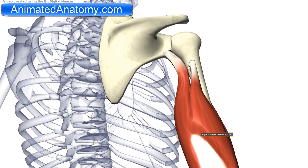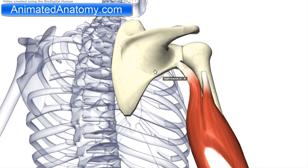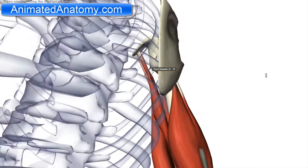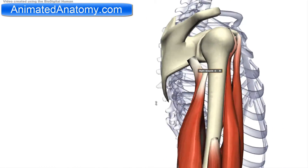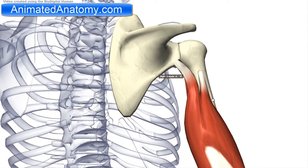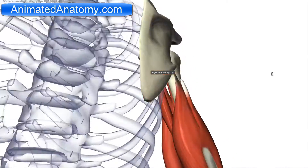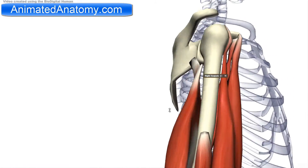It cannot be seen clearly here in this model. The long head has its origin on the scapula. The lateral head and the medial head both have their origin on the posterior humerus. Here you can see only one head instead of the two additional heads.